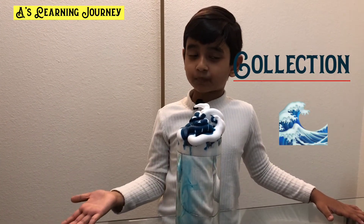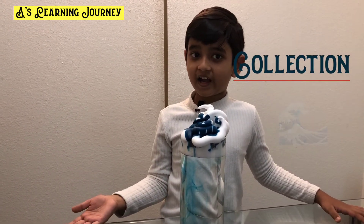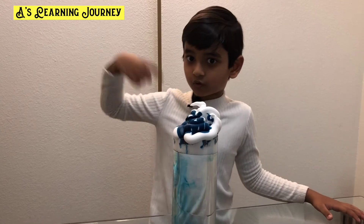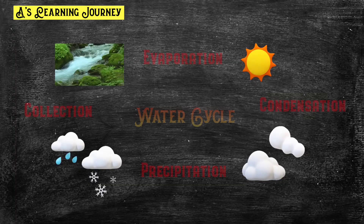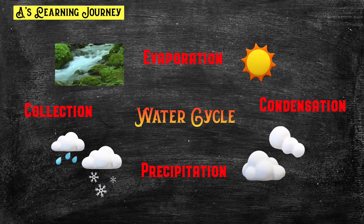So these are all the processes that the water cycle undergoes. Here's the final summary: Evaporation — it turns the water to water vapour. Condensation — the water vapour cools down and turns into clouds. Precipitation — the cloud gets too heavy and lets water out. Last but not least, collection — it fills oceans, lakes, and rivers.